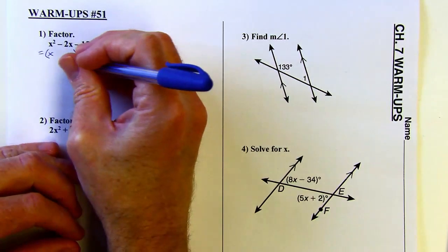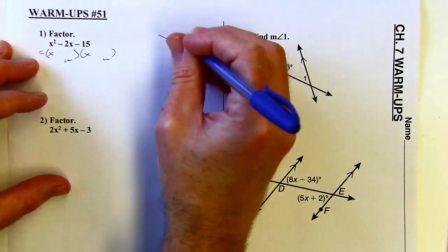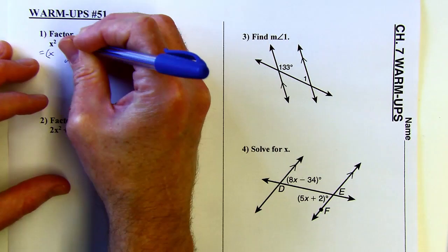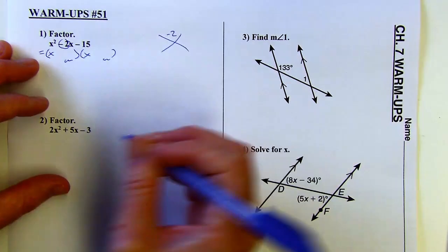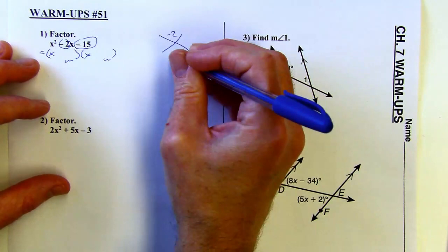I'm going to use a diamond problem to figure out what goes in the back of each parentheses. So I take the negative two, make sure the negative comes with that, and that goes up there on the top of my diamond problem. The negative 15 is going to go on the bottom.